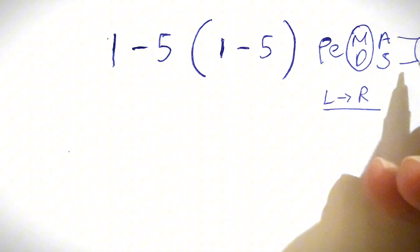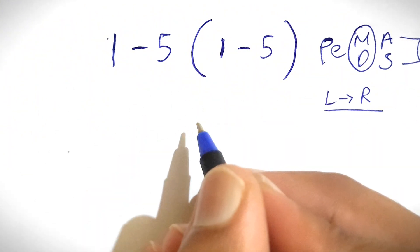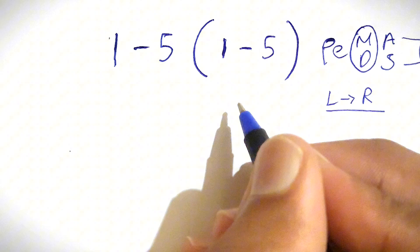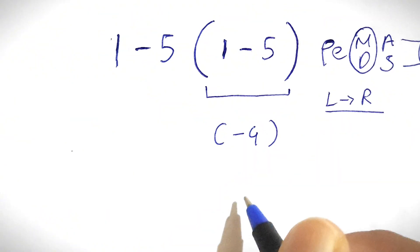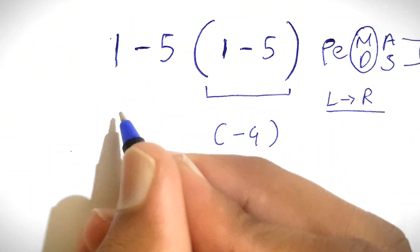So let's solve this. First we need to solve the parenthesis, which is 1 minus 5, that gives us negative 4. Now we need to rewrite the expression to make it more simple: 1 minus 5 times negative 4.